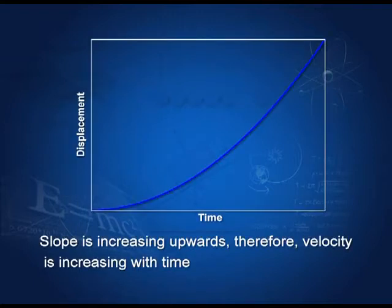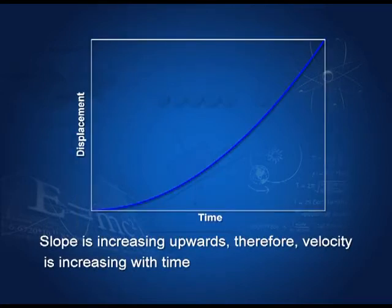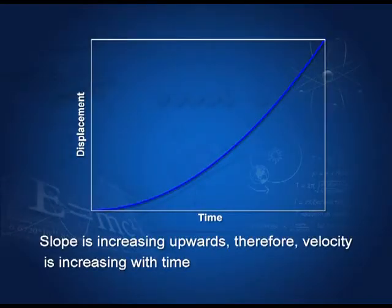Let us take another displacement-time graph where the displacement is increasing. As shown earlier, the slope is now increasing as we move along the time axis. The slope increasing as we move along the time axis means that as time increases, the slope increases. Therefore, the rate of change also increases. That means the velocity increases with time.